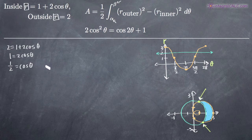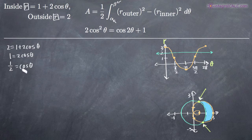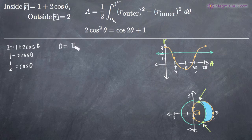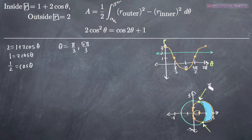If you look at your unit circle from trigonometry, you need to look for the points where the x coordinate along the circle is equal to one half, because on the unit circle cosine equals the x coordinate and sine equals the y coordinate. So you want to know where the x coordinate is equal to one half. That occurs at both pi over 3 and 5 pi over 3, so theta equals pi over 3 and 5 pi over 3, meaning the points of intersection are located at those two angles.